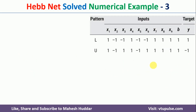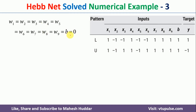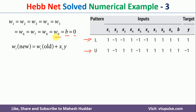Now we apply the Hebb rule to design the Hebb network. First we initialize all weights and the bias to 0. There are 9 inputs so we need weights w1 through w9, all initialized to 0. The Hebb rule states: w_i(new) = w_i(old) + x_i * y, where x_i is the input and y is the target for that training pattern.